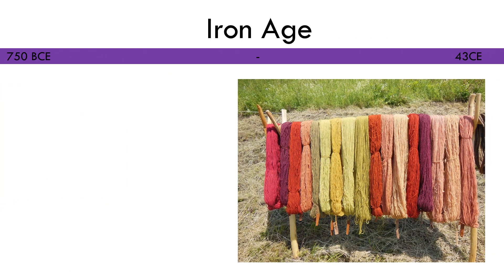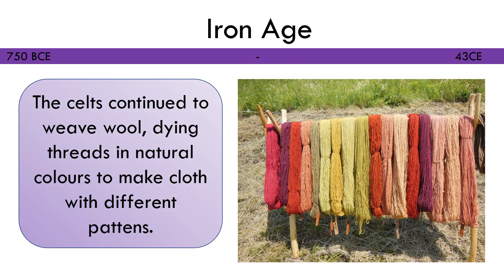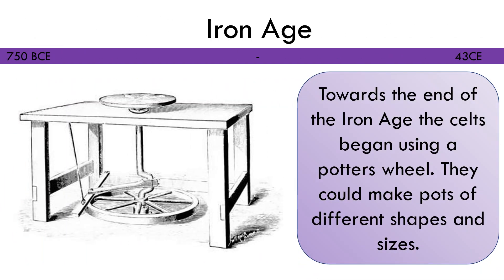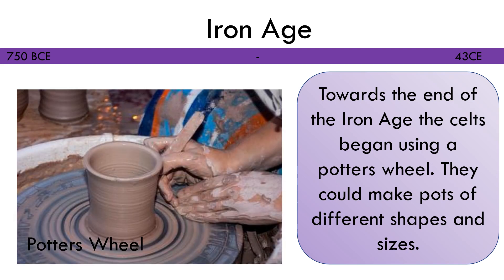The Celts continued to weave wool, dyeing threads in natural colours to make cloth with different patterns. Towards the end of the Iron Age, the Celts began to use a potter's wheel, easily allowing them to produce a number of pots in different shapes and sizes.